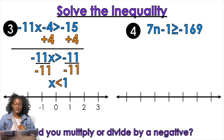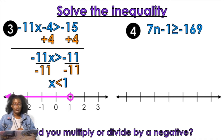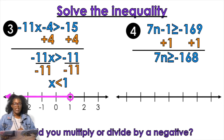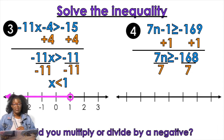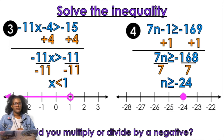On the number line: open circle or closed circle? Open. Left or right? Left. Next example: 7n - 1 ≥ -169. We add 1 to both sides — good job. That gives us 7n ≥ -168. Then we divide by 7. Is it a negative? No, so we leave the symbol alone. Open circle or closed circle? Closed. Left or right? We go to the right.